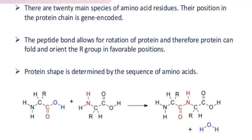There are 20 main species of amino acid residues, and their position in the protein chain is gene encoded. The peptide bond allows rotation of the protein, and therefore proteins can fold and orient the R group in a favorable position. The protein shape is determined by the sequence of amino acids.